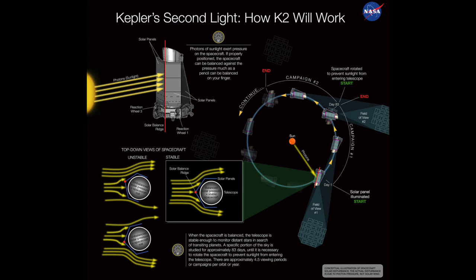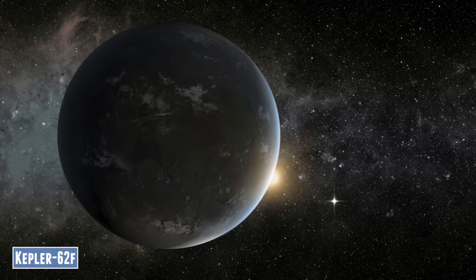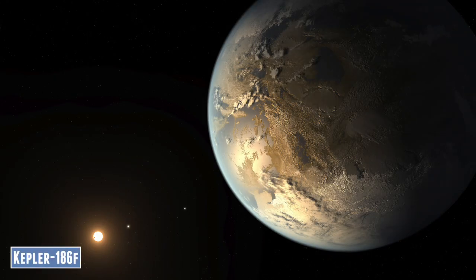Meanwhile, the analysis from the K2 mission suggests that one quarter of the larger stars surveyed may have Earth-sized planets orbiting in their habitable zones. These types of stars make up about 70% of the stars found in the Milky Way. So you can make a great estimation that tens of billions of potentially habitable planets are in our galaxy alone.